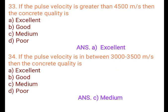Question 33: If the pulse velocity is greater than 4500 meters per second, then the concrete quality is: A. Excellent, B. Good, C. Medium, D. Poor. Answer: A. Excellent. Question 34: If the pulse velocity is between 3000 to 3500 meters per second, then the concrete quality is: Answer: C. Medium.